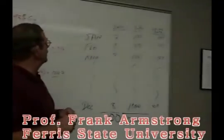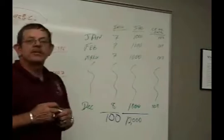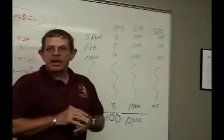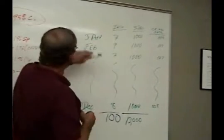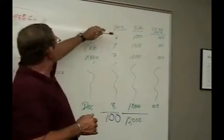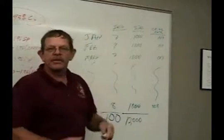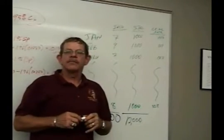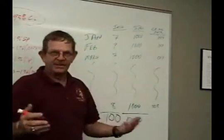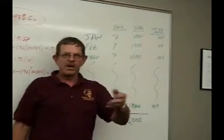Professor Frank Armstrong, Ferris State University. This is our third video for our Management 370 Quality Operations course. In your book on problem number 11, you'll see a chart of January through December. This is a measurement of crime rates and crime complaints during a 12-month period to see if they have a controlled process. You can do this with the service industry, defective parts, or whatever.